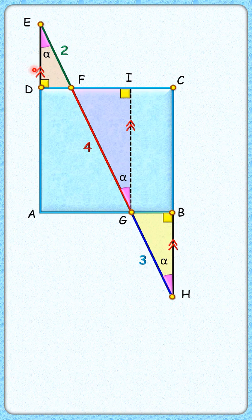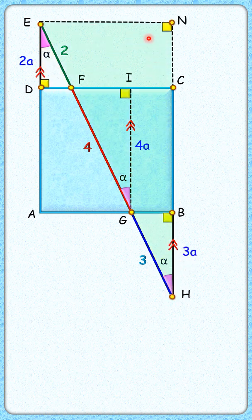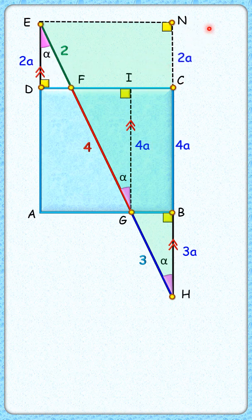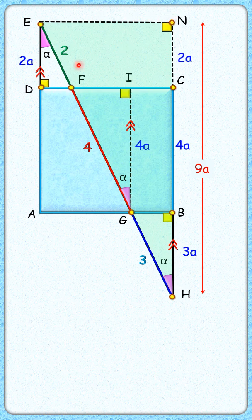So if this side length is 2a, this will be 4a, and this will be 3a. Looking at the bigger green triangle, the CB length will be 4a and the DC length will be 2a, so the complete length will be 9a. The EN length will be the same as DC, or 4a centimeters, since it's a square.